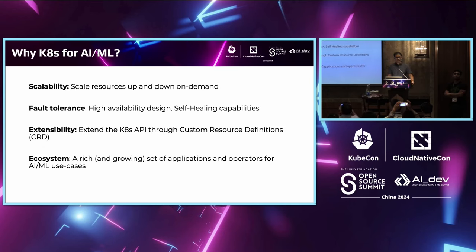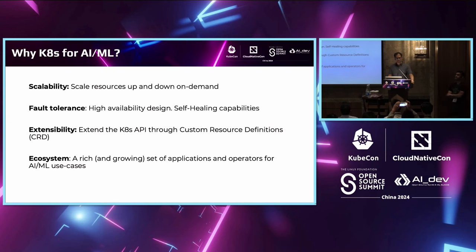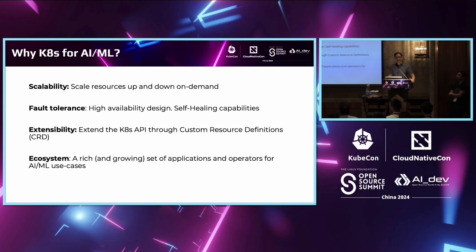So why would you use Kubernetes for AI/ML? You start off with support for scalability. Kubernetes has many features to scale up and down your workloads based on demand — for instance, if your inference workload increases significantly. In terms of fault tolerance, Kubernetes has many built-in components for self-healing capabilities, which are particularly useful for GPU workloads. One of the cool features of Kubernetes is that it's very extensible through custom resource definitions, enabling a broad ecosystem of tools for AI/ML workloads.